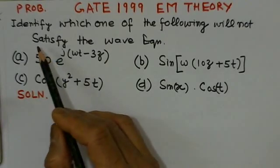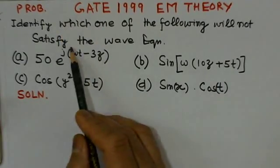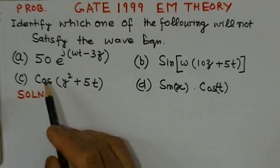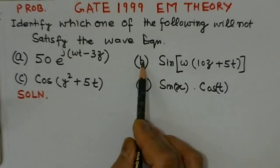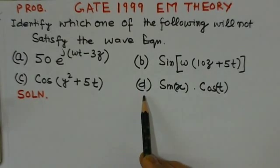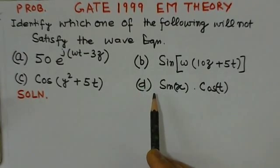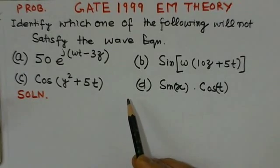So we can read out this problem. It says, identify which one of the following will not satisfy the wave equation. There are four options given here: A, B, C, and D options. Out of these four options, we have to find out which would not satisfy the wave equation.